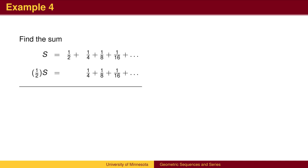We use the same technique, multiplying the series by the common ratio of 1 half. Then subtracting. Notice that every term after the first will cancel. We then solve for s.